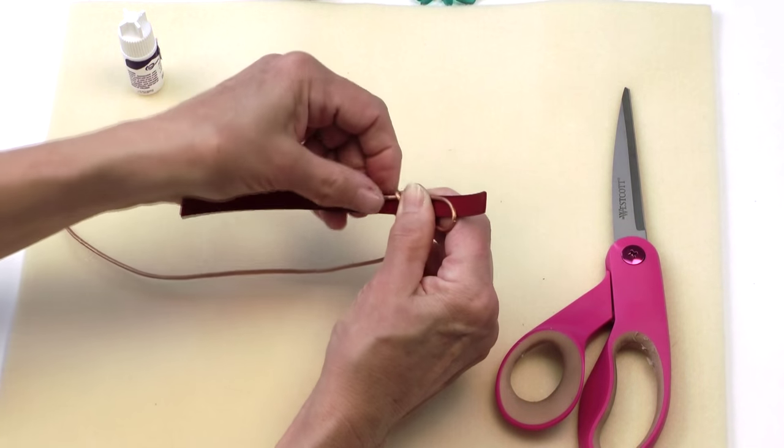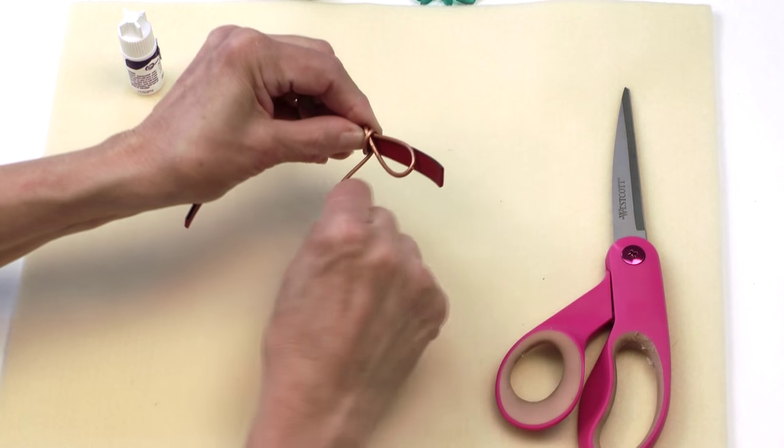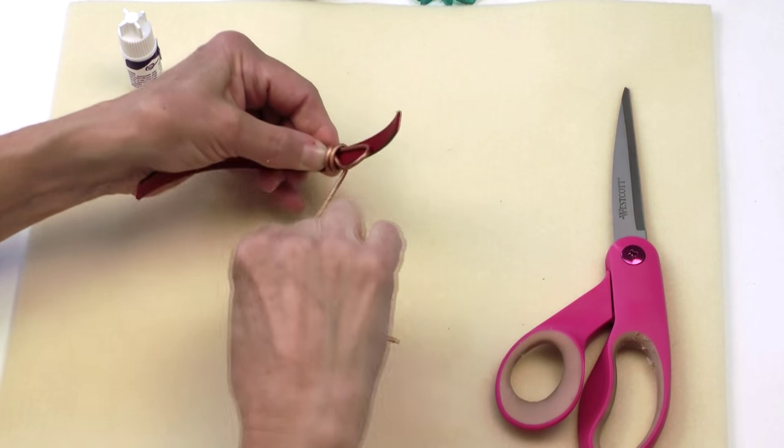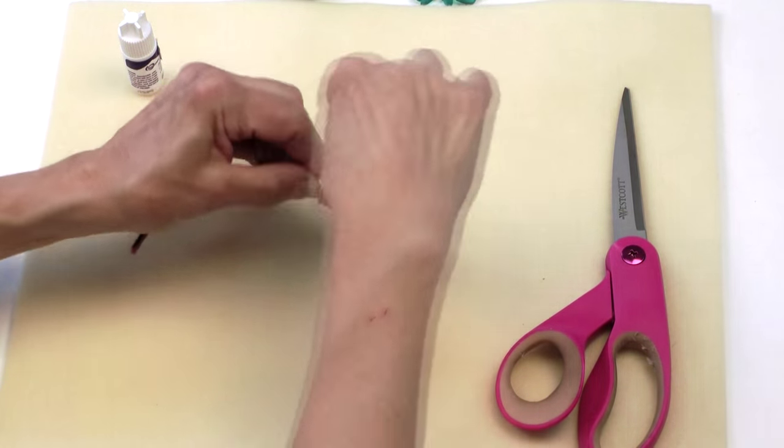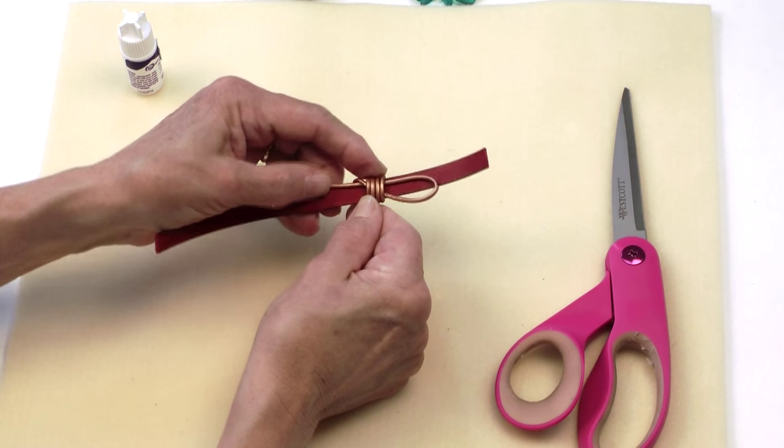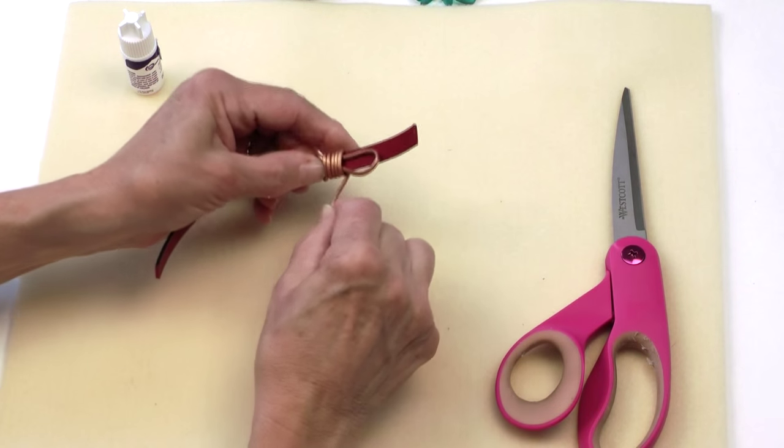And then I'm just going to start to coil around both the loop and the flat leather. And you notice I'm working up towards the loop, so I've started down here by the tail and I'm working up towards the loop. And as I get as many loops as I want, I'll stop.